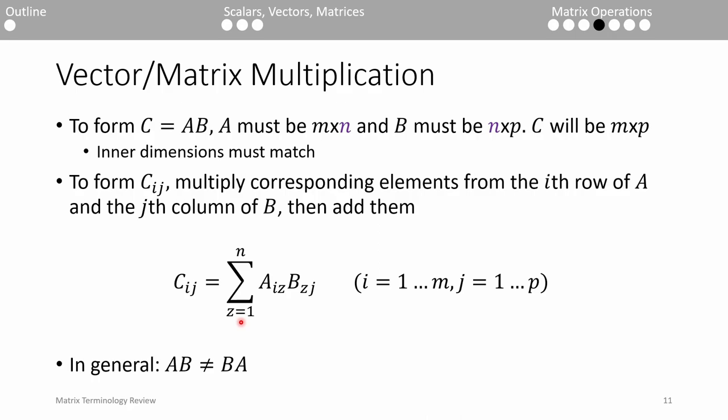Non-scalar multiplication is much more complex. Before any math is done, both operands need to have matching inner dimensions. If A is size M by N and B is size N by P, they have matching inner dimensions because the number of columns of A equals the number of rows of B.